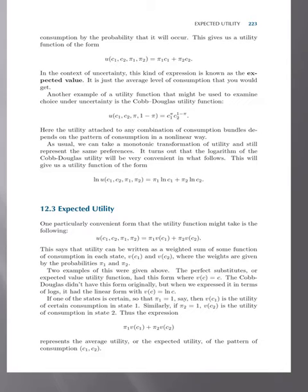This says that utility can be written as a weighted sum of some function of consumption. v(c1) and v(c2) represent two consumption stages. The weights are given by the probabilities pi1 and pi2.